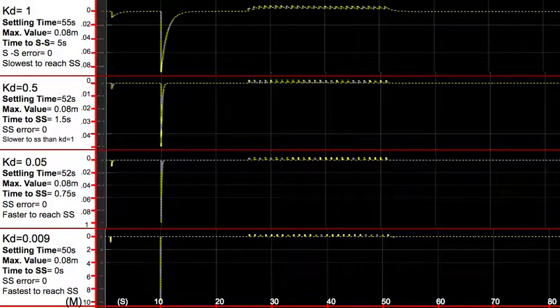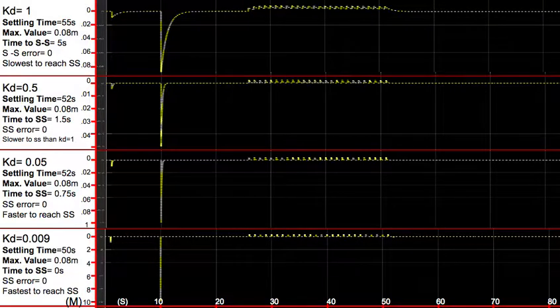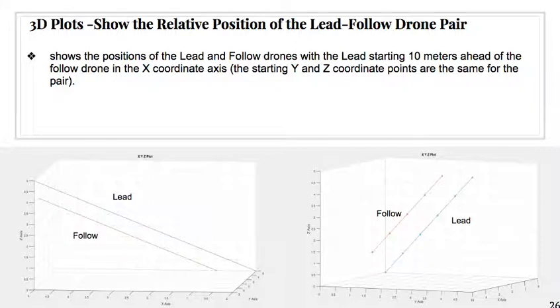And once again for KD, we can see the same thing. The smaller the value, the fastest it would reach steady state, and the error is also 0 for steady state error. As a result, we're given two 3D plots, and these show the same exact thing, just shown in different angles. The red signifies the follow drone, and the blue signifies the lead drone.